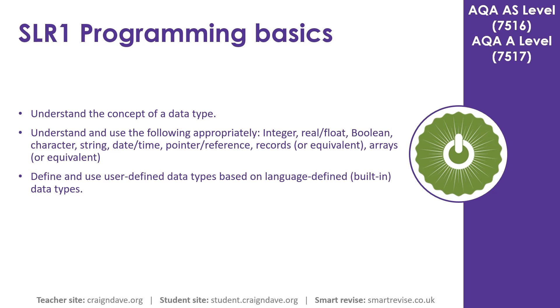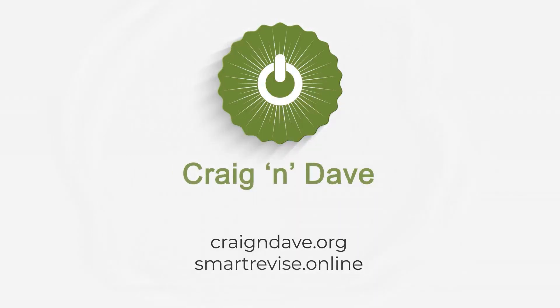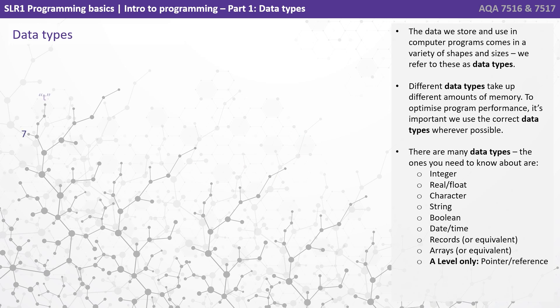In this video on programming basics, we talk about data types. The data we store and use in computer programs comes in a variety of shapes and sizes. We refer to these as data types. Different data types take up different amounts of memory. To optimize program performance, it's important we use the correct data type whenever possible. There are many data types, and the ones you need to know about are shown here.